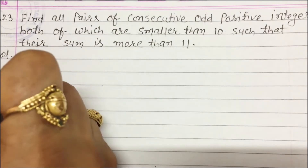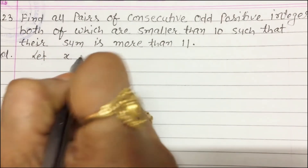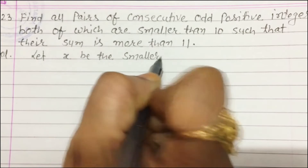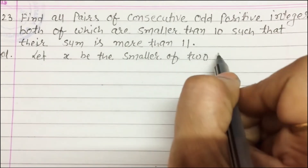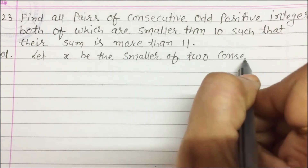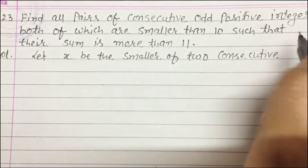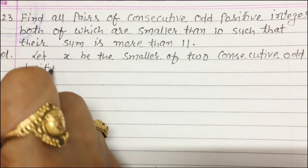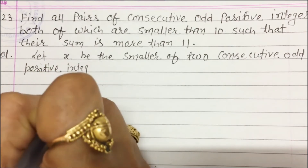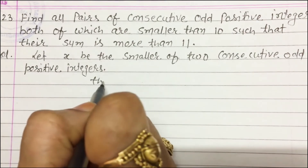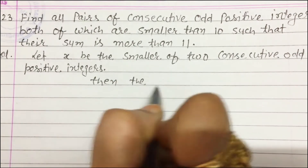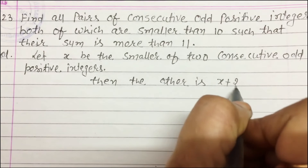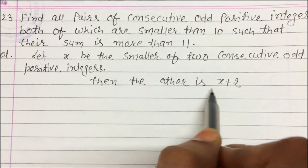First of all, let x be the smaller of the two consecutive odd positive integers. Then the other is x + 2. First is x, then the other is x + 2.